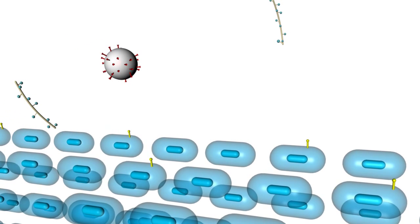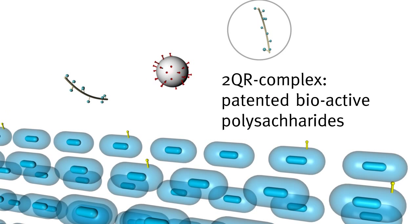The 2QR-complex blocks this binding mechanism of harmful bacteria in a completely safe and natural way. The patented polysaccharide molecules of the 2QR-complex stick to the surface of bad bacteria and entangle it.